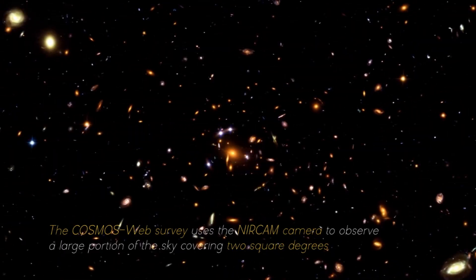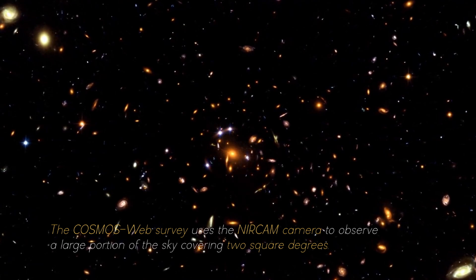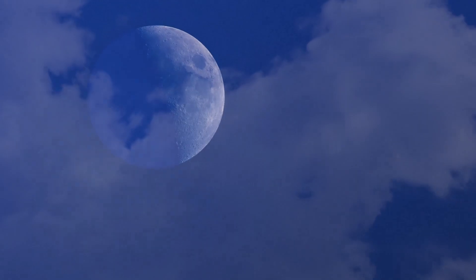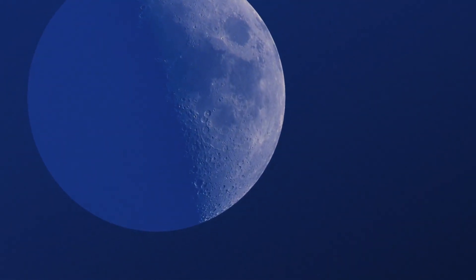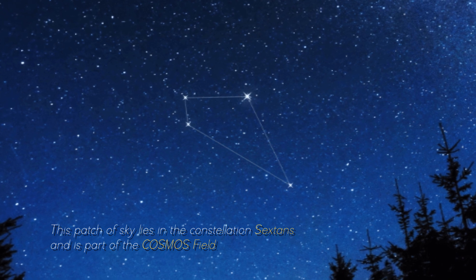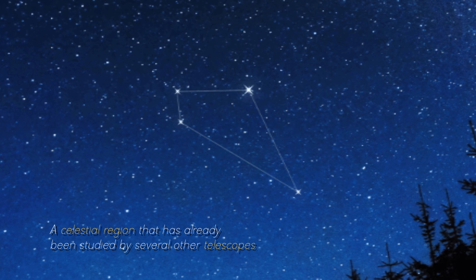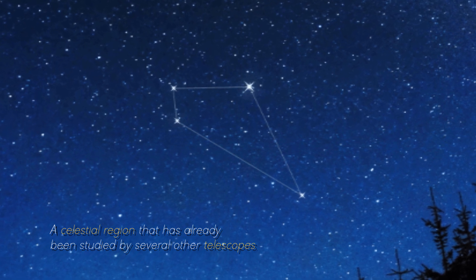The Cosmos Web Survey uses the NIRCam camera to observe a large portion of the sky covering two square degrees. To put it in perspective, this area is equivalent to about ten times the surface area of the full moon. This patch of sky lies in the constellation Sextans and is part of the Cosmos Field.